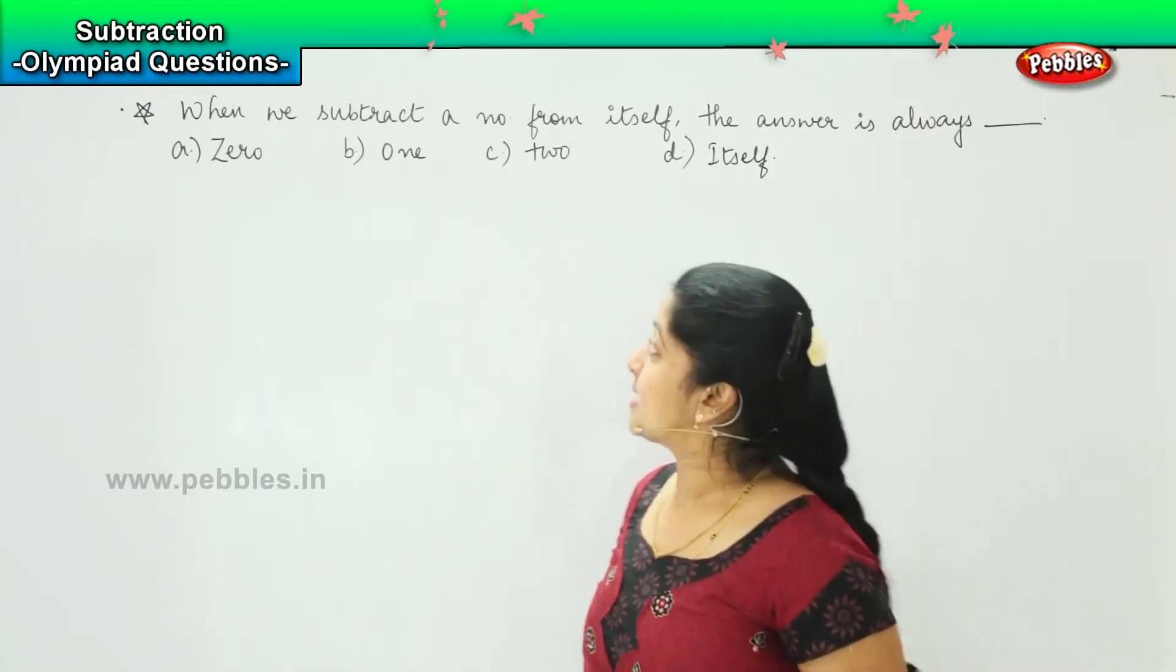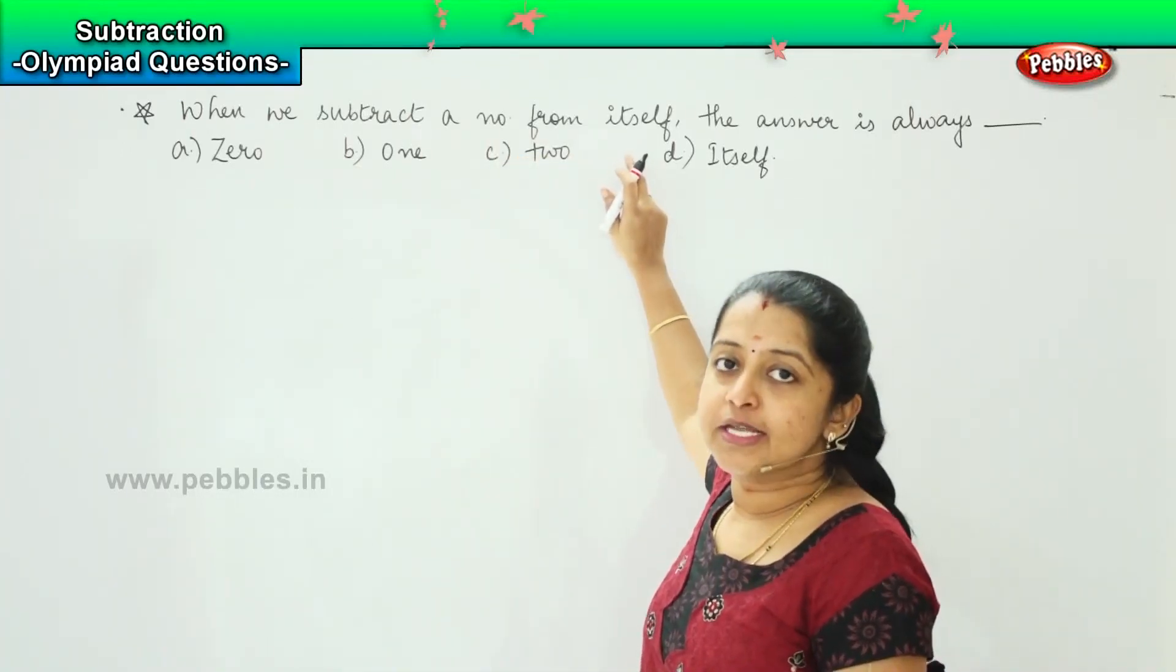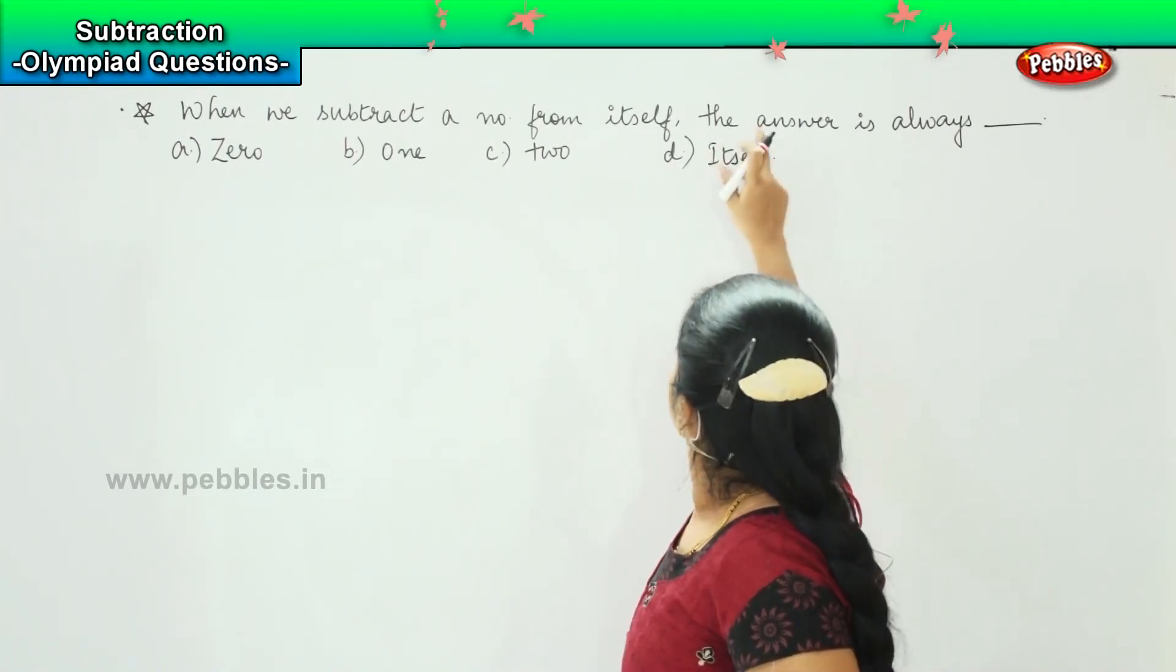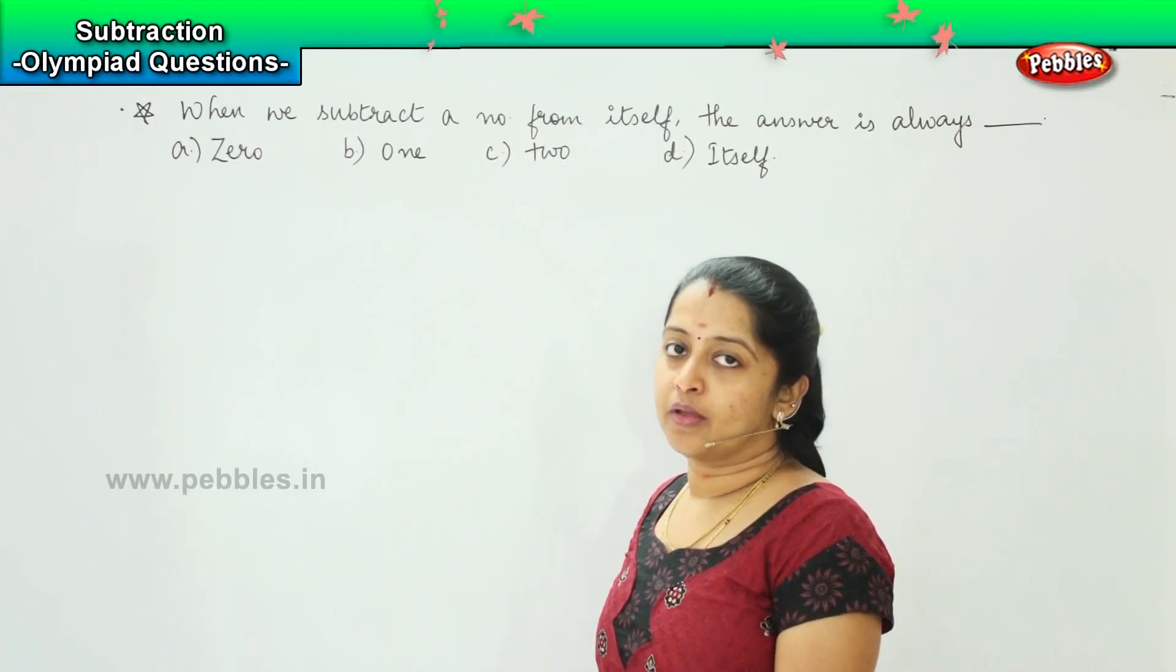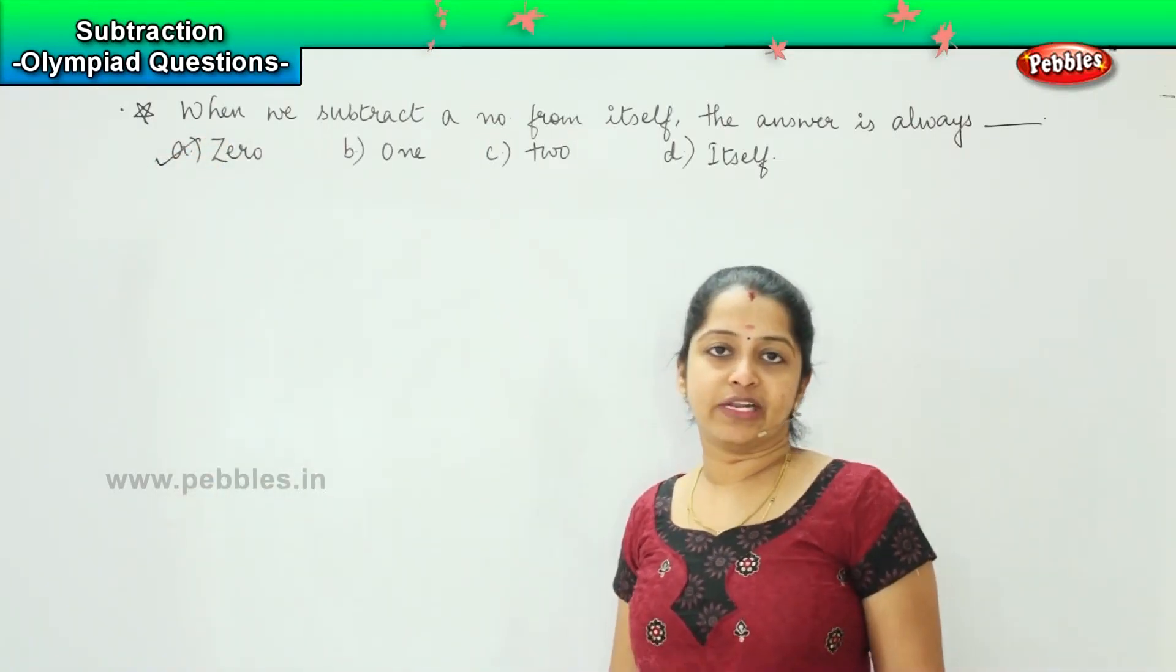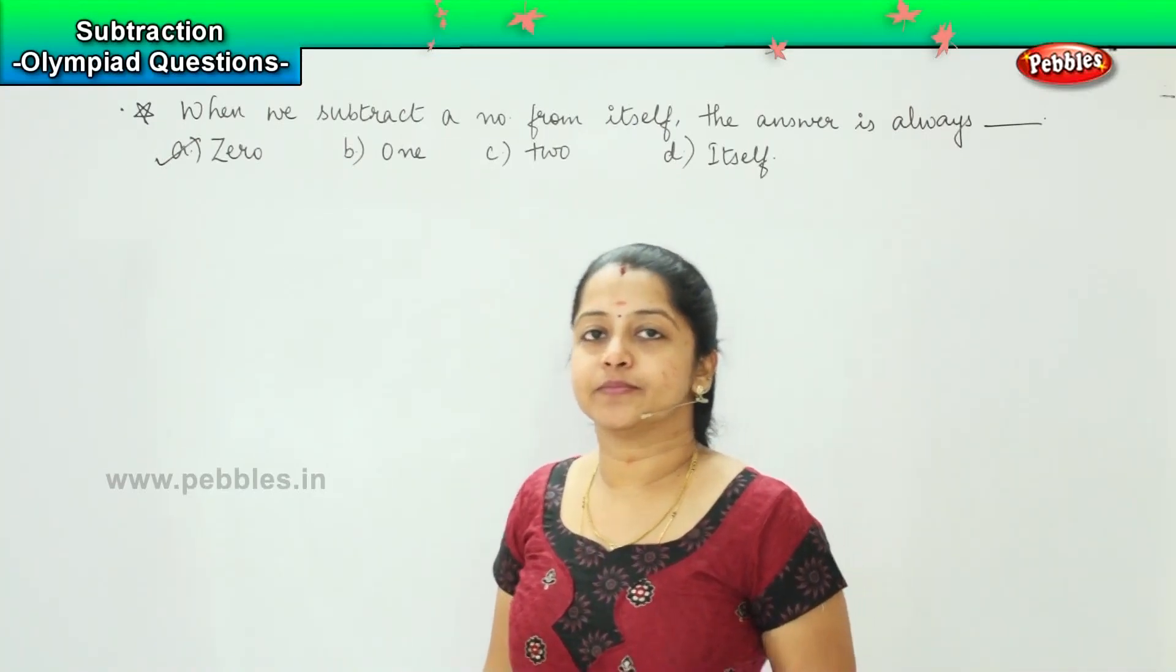So the question is asking us, when we subtract a number from itself, which means when I subtract a number from the number itself, the answer is always, very good, it is zero. For example, 100 minus 100 will give me zero. Clear? Shall we move ahead?